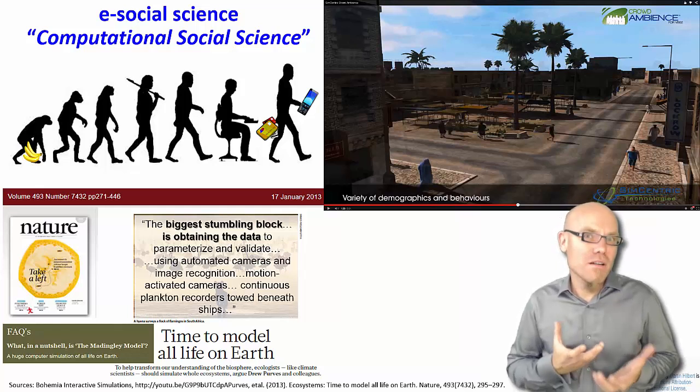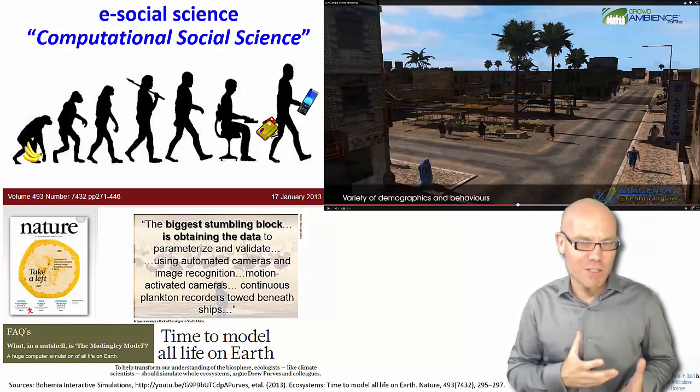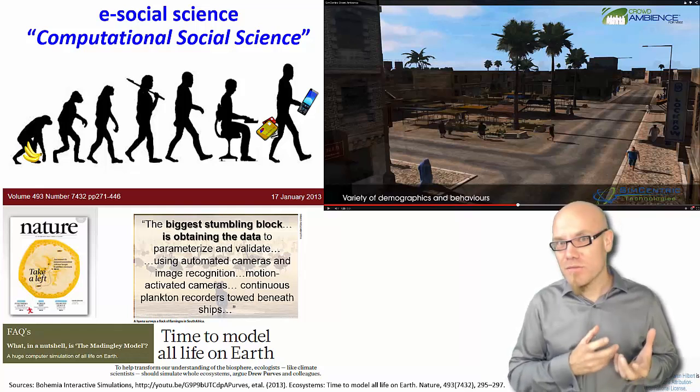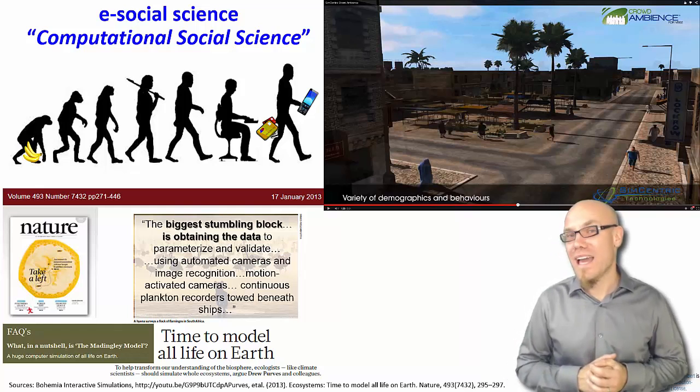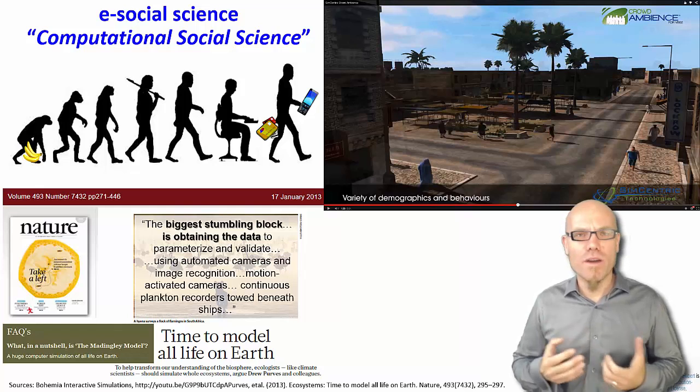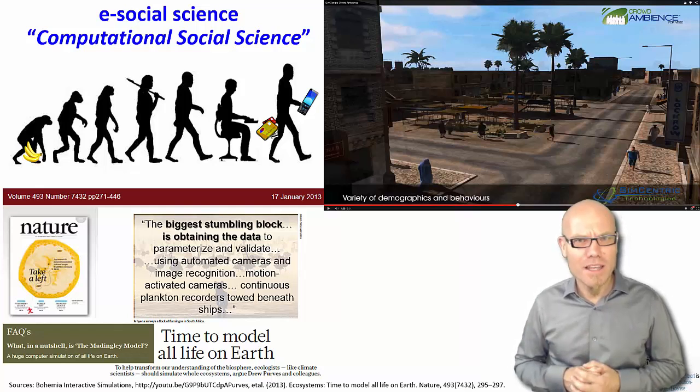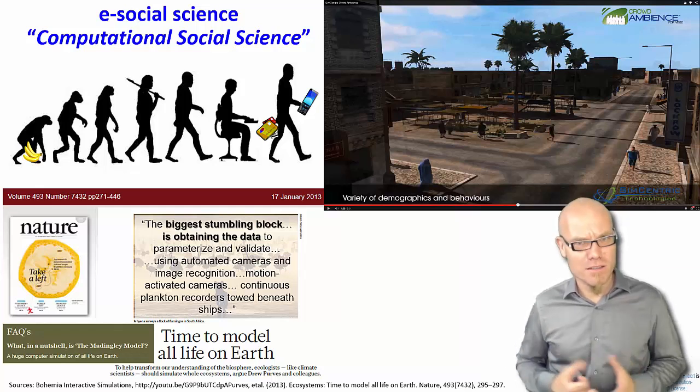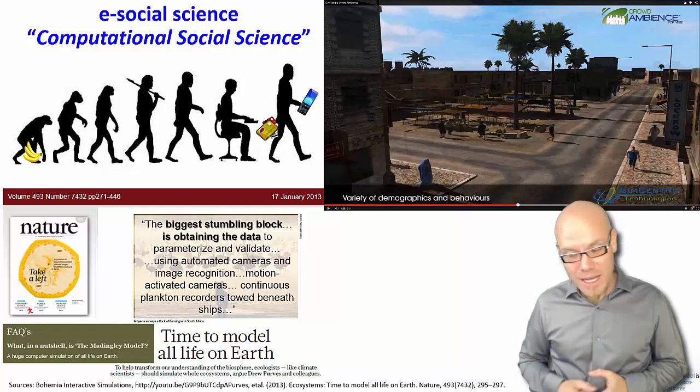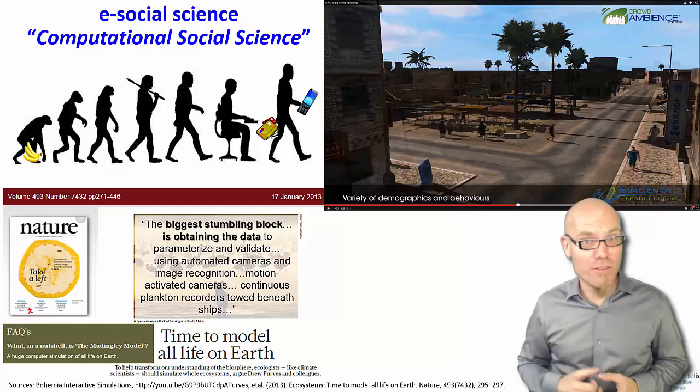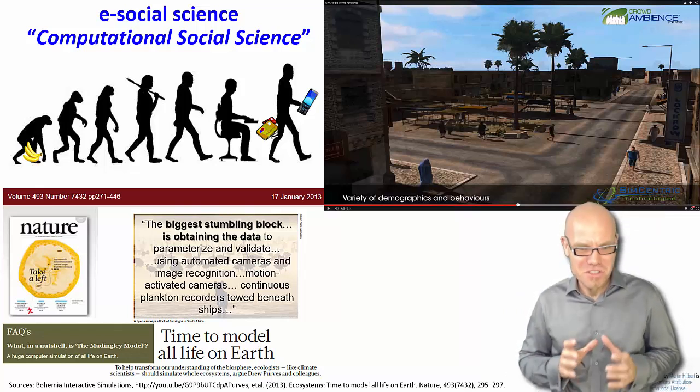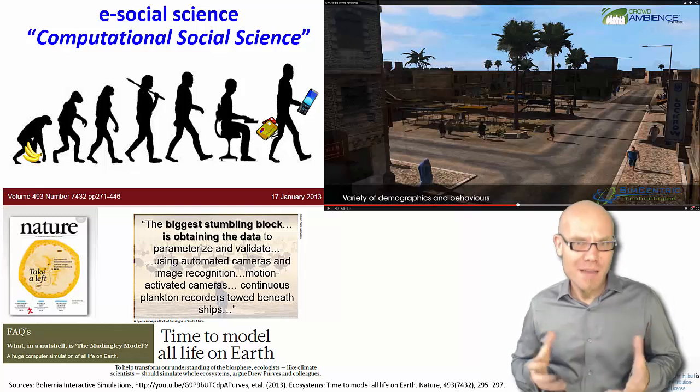Nowadays we certainly have much more data than we can possibly analyze in the social sciences. It might be the most data-complete science that we have. Biologists don't know where every animal is on planet Earth. Physicists don't even know about all the stars in the galaxy. But everyone on planet Earth has a mobile phone, and we know basically where they are and where they move, so we have a complete sample.